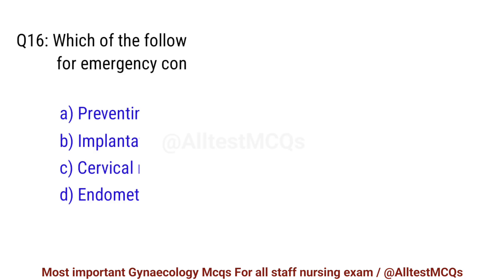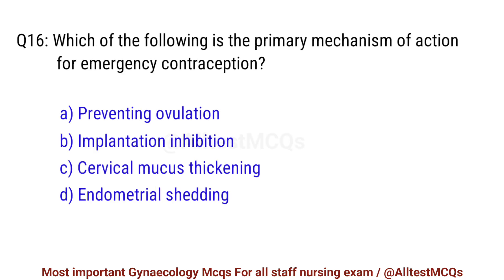Question No. 16. Which of the following is the primary mechanism of action for emergency contraception? Right option is A. Preventing ovulation.